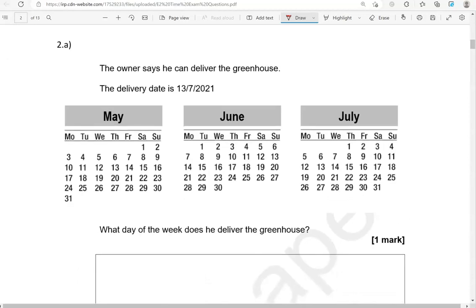The owner says he can deliver the greenhouse. The delivery date is 13 of the 7th, 2021. What day of the week does he deliver the greenhouse? So, we've got three calendars in here. One for May, one for June, and one for July. Which one should we focus on? The month is this one here. The 7th. The 7th in the year. So, starting with January, February, March, April, May, June, July. So, July is the 7th.